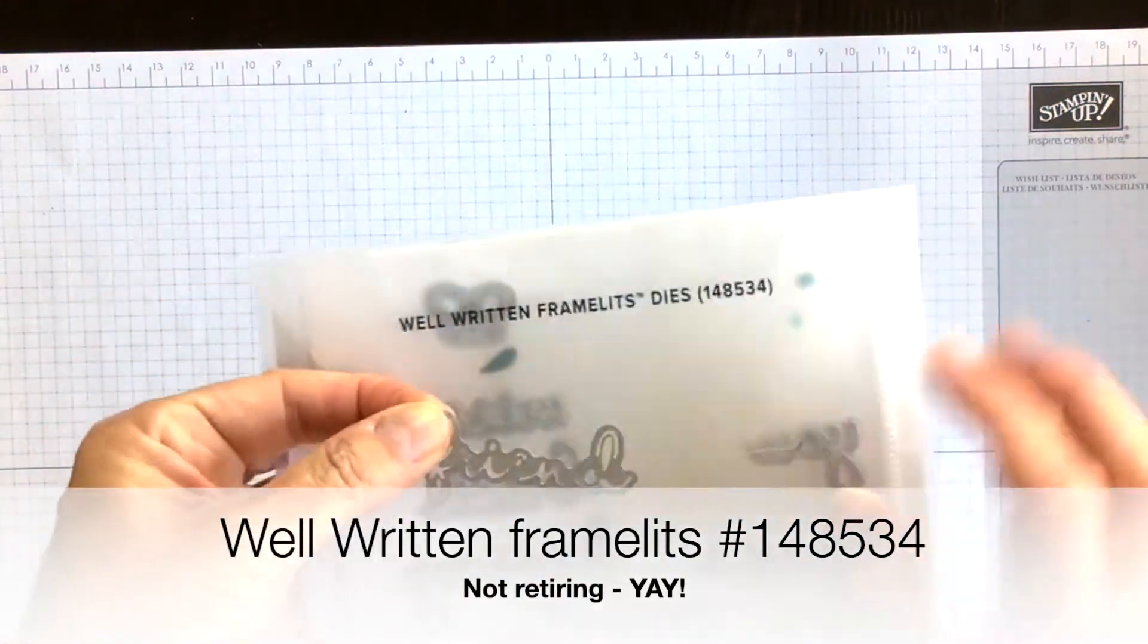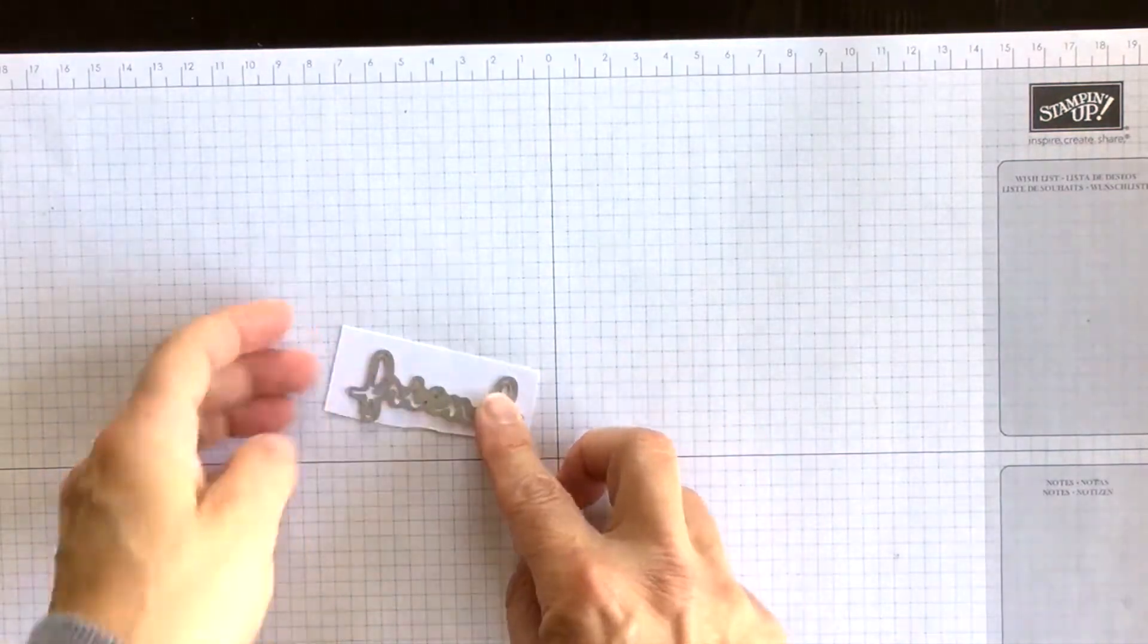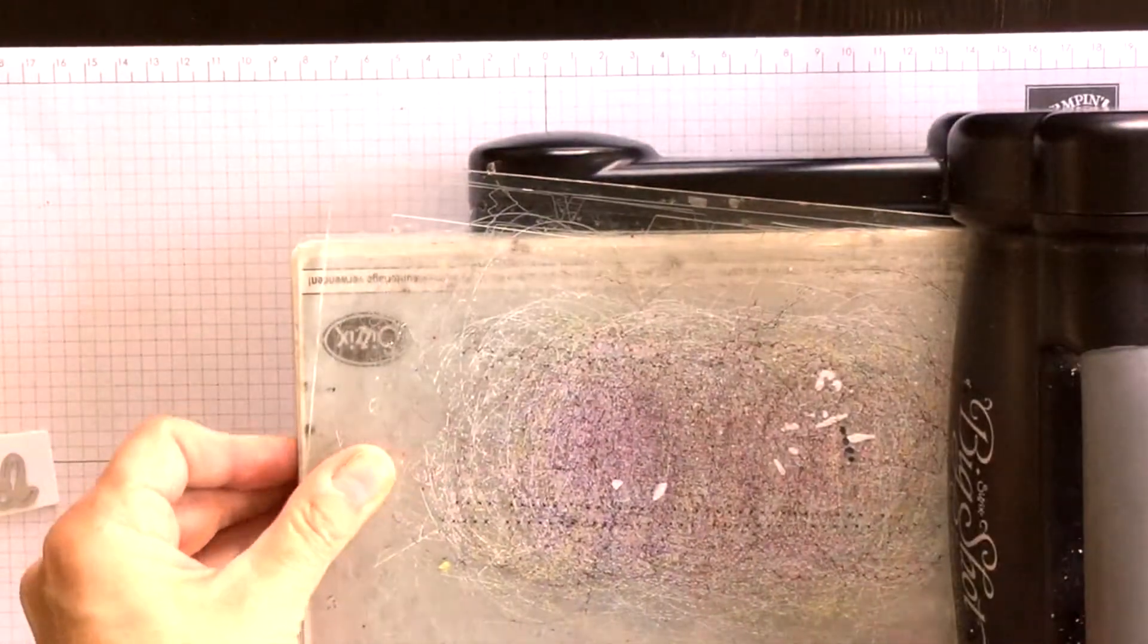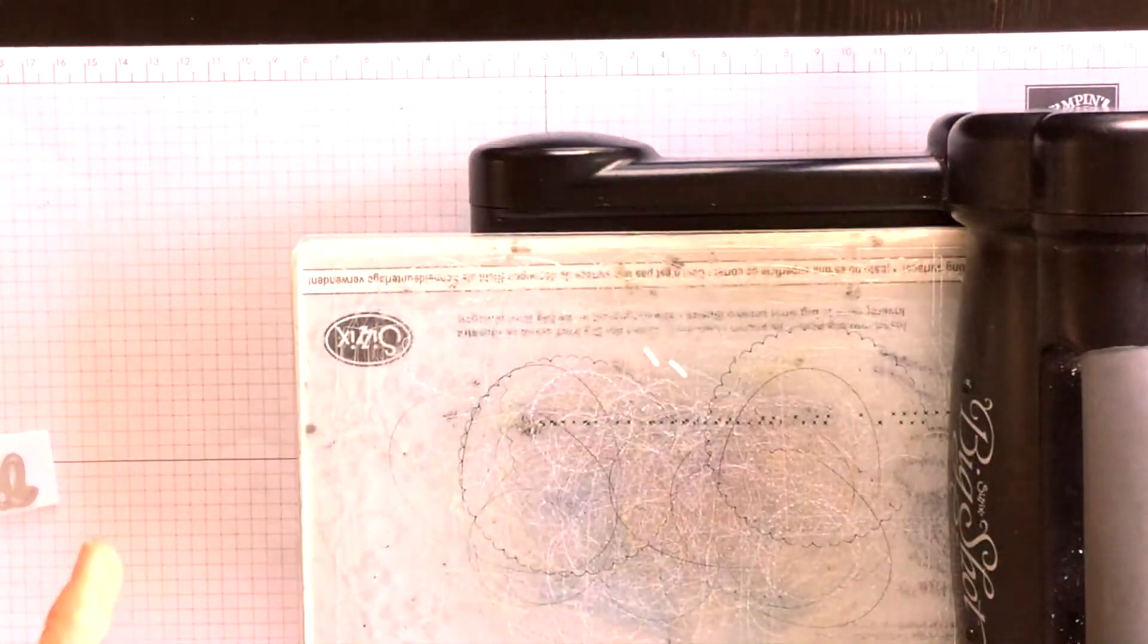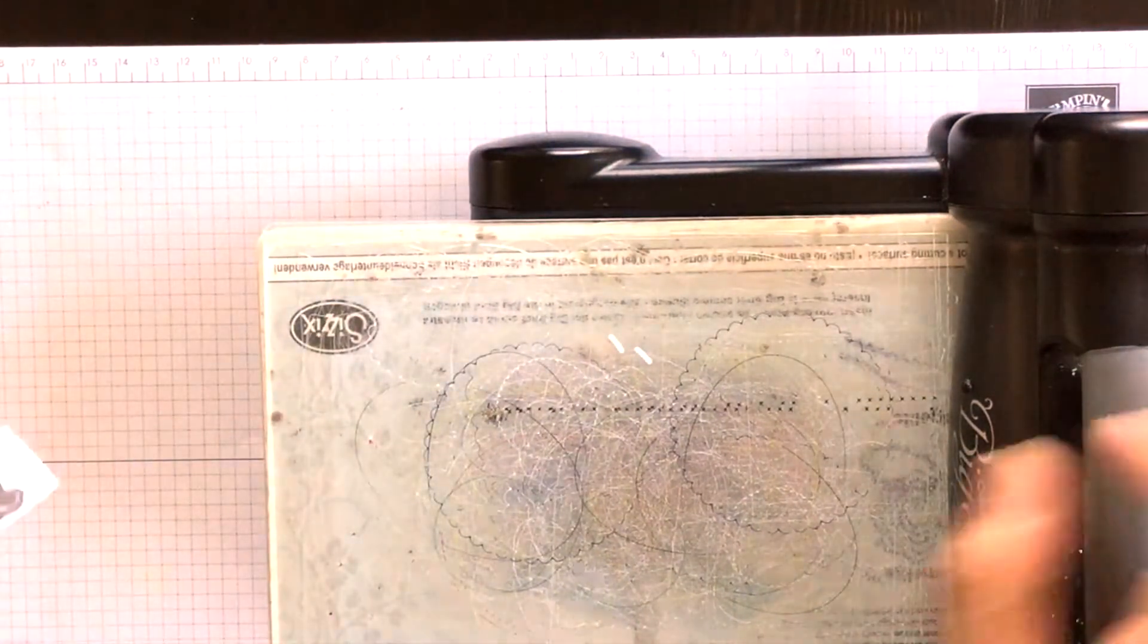I've chosen the die that says friend because I'm going to create a friendship card. So what I want to do is start off right away by die cutting my word because it's going to help determine the layout on the front of my card and you'll see what I mean in a minute.